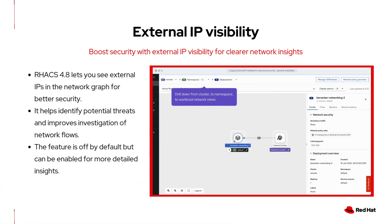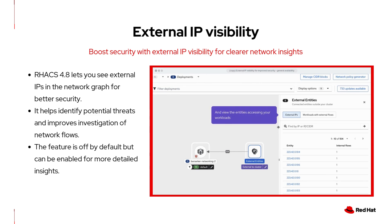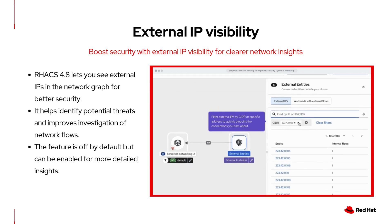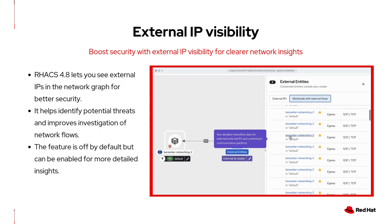First up is a highly anticipated feature in ACS 4.8: external IP visibility. You can now see external IPs directly in the network graph dashboard, giving you better insight into potential threats alongside your existing Layer 4 network security features. In ACS 4.8 this feature is disabled by default, but once enabled, external IPs will appear in the graph and unauthorized network flow violations will include detailed external IP info to help speed up investigations.